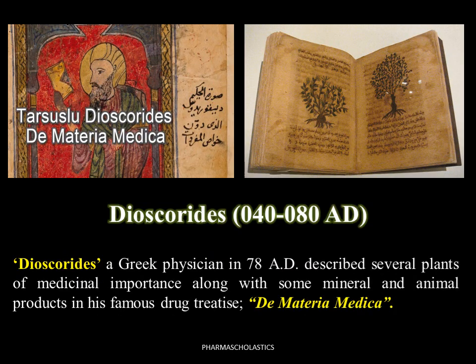Dioscorides, a Greek physician in 78 AD, described several plants of medicinal importance along with some minerals and animal products in his famous drug treatise, the Materia Medica.